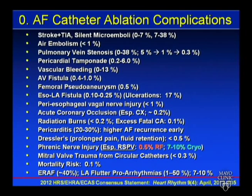Mitral valve trauma from circular catheters — the 12s and 15s — can get entrapped in the mitral valve apparatus; incidence is roughly 1 in 300–700, hard to pin down. Attempting to twist it out worsens things and may require percutaneous or surgical extraction. Reentrant atrial tachycardia after ablation is considered a complication if you haven't checked your lines — leaving gaps in lines you create in the left atrium makes you prone to that.